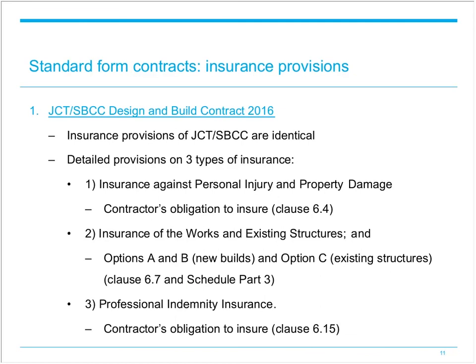We'll now look at how standard form contracts approach construction insurance — what insurance is required and who is responsible for arranging it. We'll look firstly at JCT and SBCC contracts, then NEC3 and NEC4. The JCT and SBCC standard form contract insurance provisions are identical. Whether the project is in England under JCT or Scotland under SBCC, the provisions are the same. We'll look at one of the most popular forms, the Design and Build Contract of 2016.